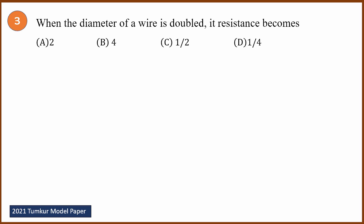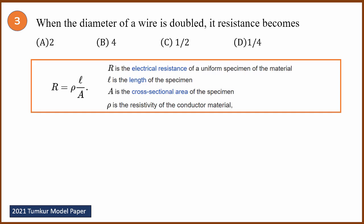Third question: when the diameter of a wire is doubled, what happens to its resistance? We need to use the resistance formula. Resistance is directly proportional to length — so as length increases, resistance increases. Resistance is inversely proportional to cross-sectional area — so as area increases, resistance decreases.